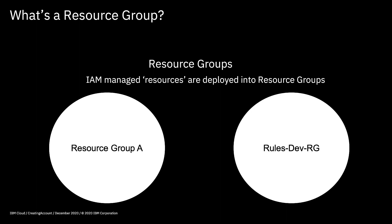Typically it's best practice to have a different resource group for each project environment that you're working with. So if I was working on a project called RulesDev and I wanted to create a new resource, let's say a Cloudant instance, then when I create that resource I would typically put that into my RulesDev resource group just to keep it separate from everything else. A resource group is a logical container for your resources, and using that container structure makes those resources easier to group together and manage.